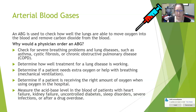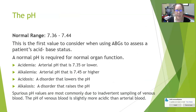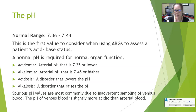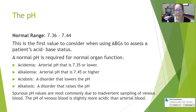The pH normal range is 7.36 to 7.44 — think of 7.4 as the normal blood pH. This is the first value to consider when looking at ABGs to assess a patient's acid-base status. We want to classify whether they are normal or compensated, or whether they have acidemia (pH 7.35 or lower) or alkalemia (arterial pH 7.45 or higher).